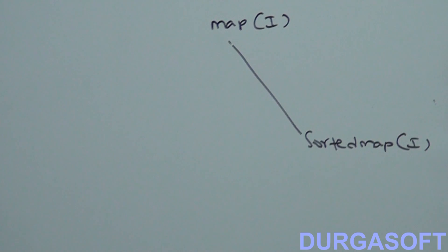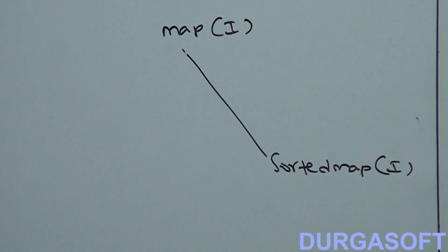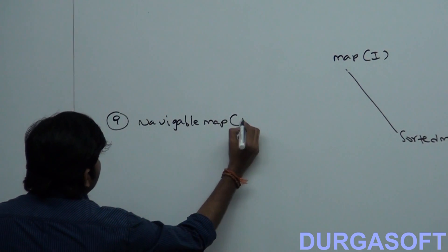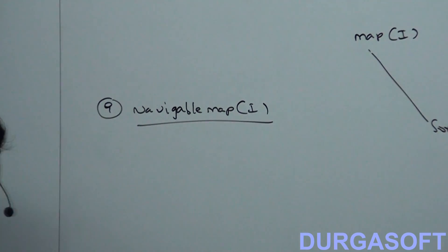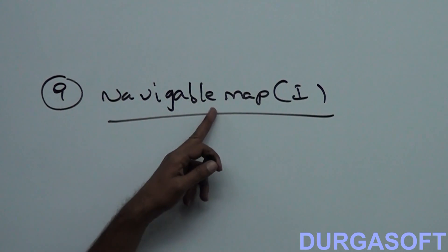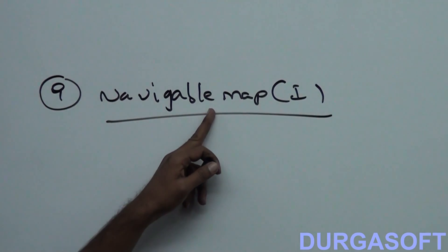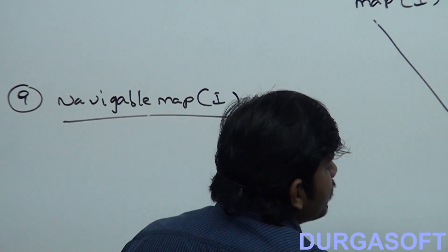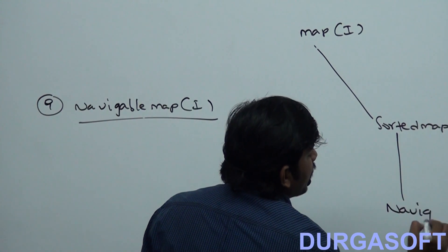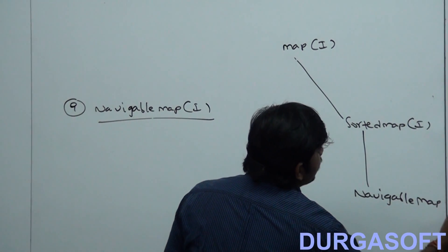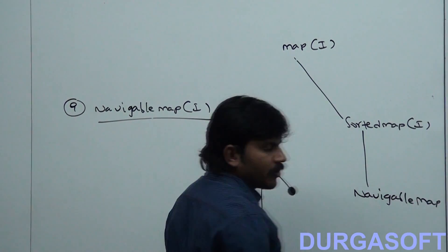The ninth one is Navigable Map. Navigable Map is the child interface of Sorted Map.